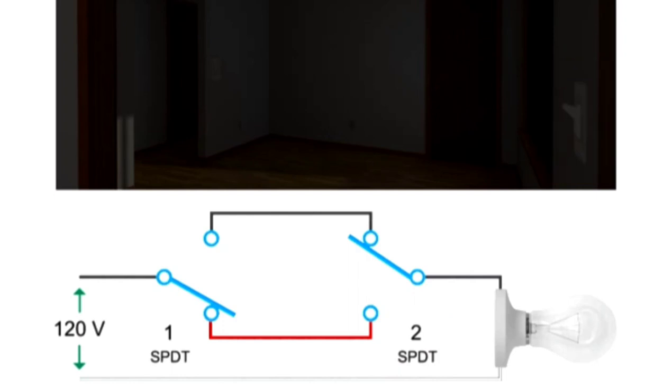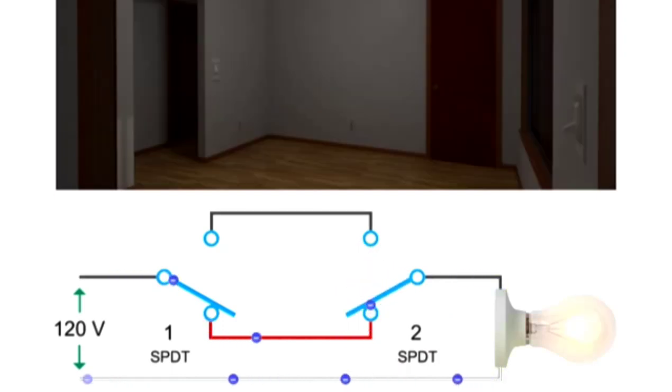The switches can also be in a down position, in which case current flows and the light is on.